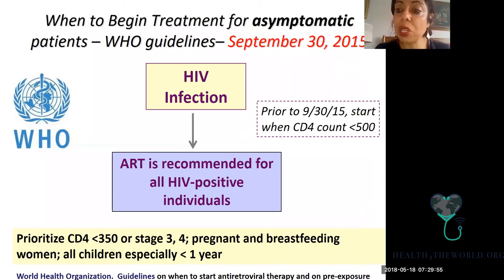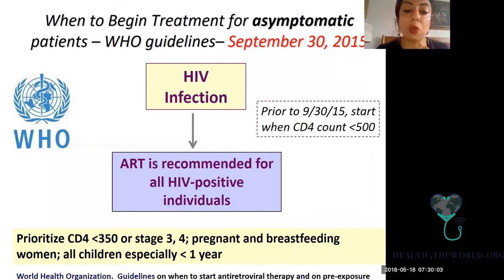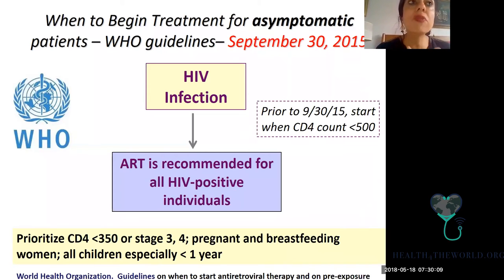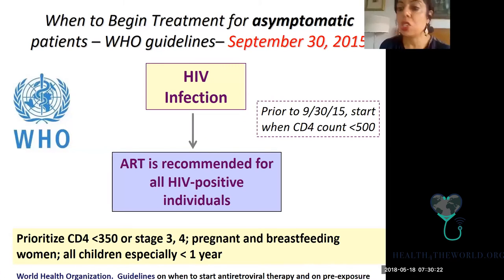Those effects include the risk of transmitting HIV to others. Those beneficial effects also include not having chronic inflammation in the human body. Even if your immune system isn't depleted, having chronic HIV can lead to inflammation and you can be more exposed to heart attacks and strokes. And so essentially in 2015, the world said everyone with HIV — 36.7 million people worldwide — should have access to antiretroviral therapies.